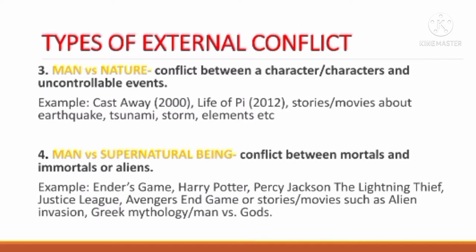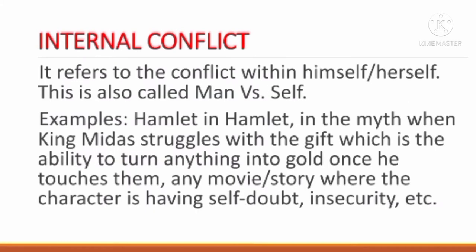The last type of external conflict is man versus supernatural being — a conflict between mortals and immortals or aliens. Examples include Ender's Game, Harry Potter, Percy Jackson: The Lightning Thief, Justice League, Avengers Endgame, or stories and movies such as alien invasion, Greek mythology, and man versus gods.